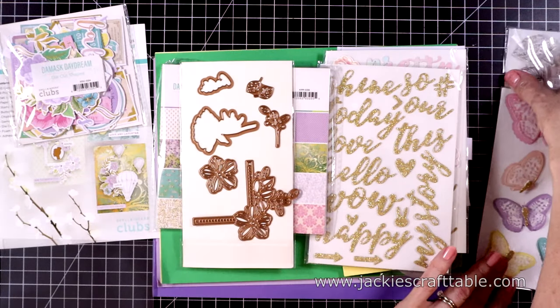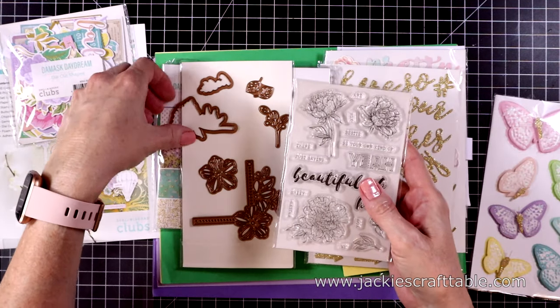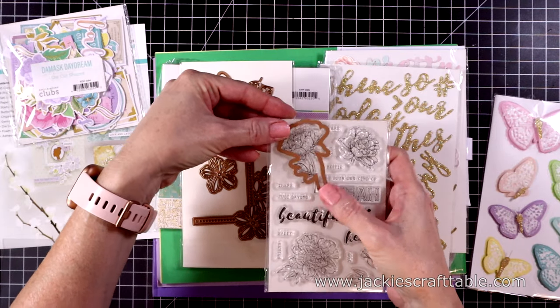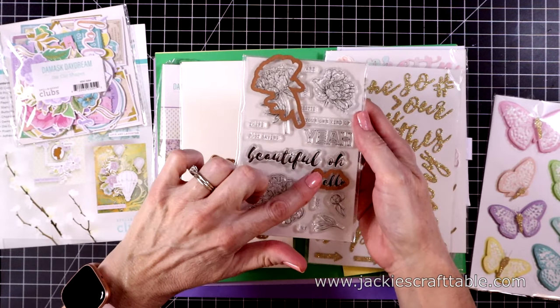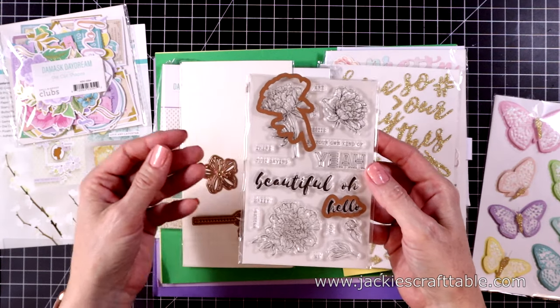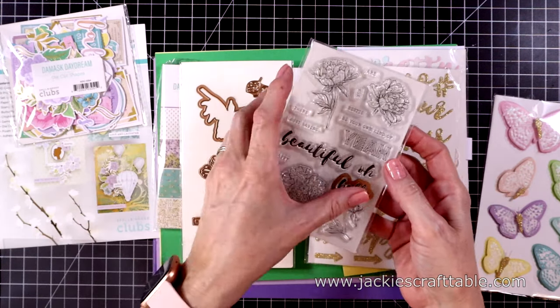And then it also coordinates with the stamp set. So it cuts out the flower with a stem. And it cuts out one of the sentiments, the sentiment that says hello. I love it when it has coordinating dies.